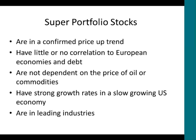Some of the common characteristics of these super portfolio stocks are that they're in a confirmed price uptrend. We use our trade selection process to select these stocks, and I like to focus on the ones that have little or no correlation to European economies and debt. They're not dependent on the price of oil or commodities, because we've had a worldwide collapse in oil and commodity prices due to the weak economies. You don't want to buy stocks that are dependent on oil or commodities going up — that's been a bad bet.